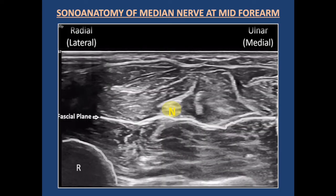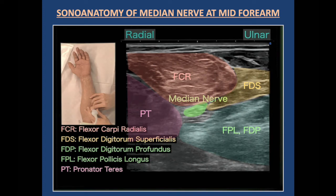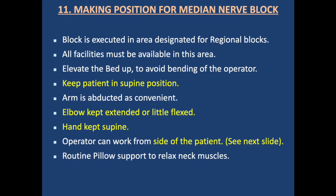This diagram shows the median nerve in the mid forearm, clearly visible between the two muscle groups — the superficial and deep flexors. This color diagram shows the sonoanatomy of the median nerve at mid forearm. The median nerve is placed between the two groups of flexor compartments: FCR (flexor carpi radialis) and flexor digitorum superficialis in the superficial group; and below we can see pronator teres, flexor pollicis longus, and flexor digitorum profundus in the deep group.